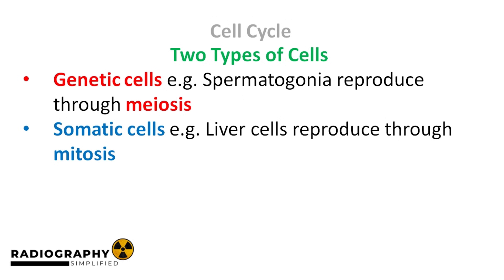According to biologists, the human body is made of two types of cells: the genetic and somatic cells. The genetic cells include cells responsible for producing offspring, such as the spermatogonia in males and oogonia in females. All other cells of the body are somatic cells. Genetic cells reproduce through a process called meiosis, while somatic cells reproduce through a process called mitosis. We'll focus the conversation on mitosis to keep things simplified.